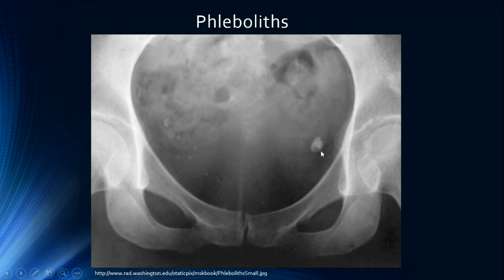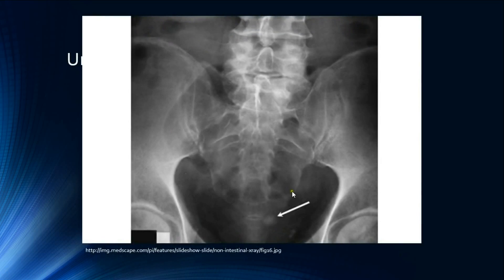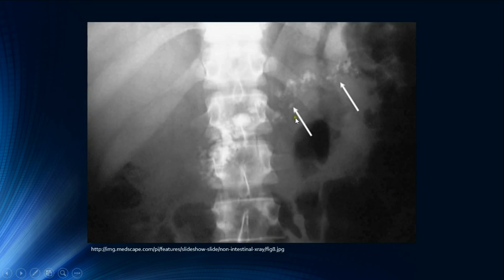To differentiate ureteric stones from phleboliths: phleboliths have a central lucency surrounded by calcification (calcification in vein walls), whereas ureteric stones show a peripheral lucency with central opacity, known as the soft tissue rim sign. Here is a radiograph showing multiple tiny calcifications consistent with chronic calcifying pancreatitis.